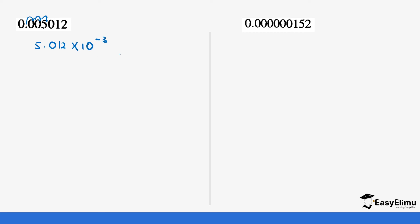For small numbers, we move to the right. For 0.00501, moving the decimal right: one, two, three times gives 5.012 times 10 power negative 3. Remember, this can also be written as 5.012 divided by 10 power 3, but the standard form is the first version. For the next small number, we move the decimal seven times to the right: one, two, three, four, five, six, seven — giving 1.52 times 10 power negative 7. When you move right, the power is negative; when you move left, the power is positive.